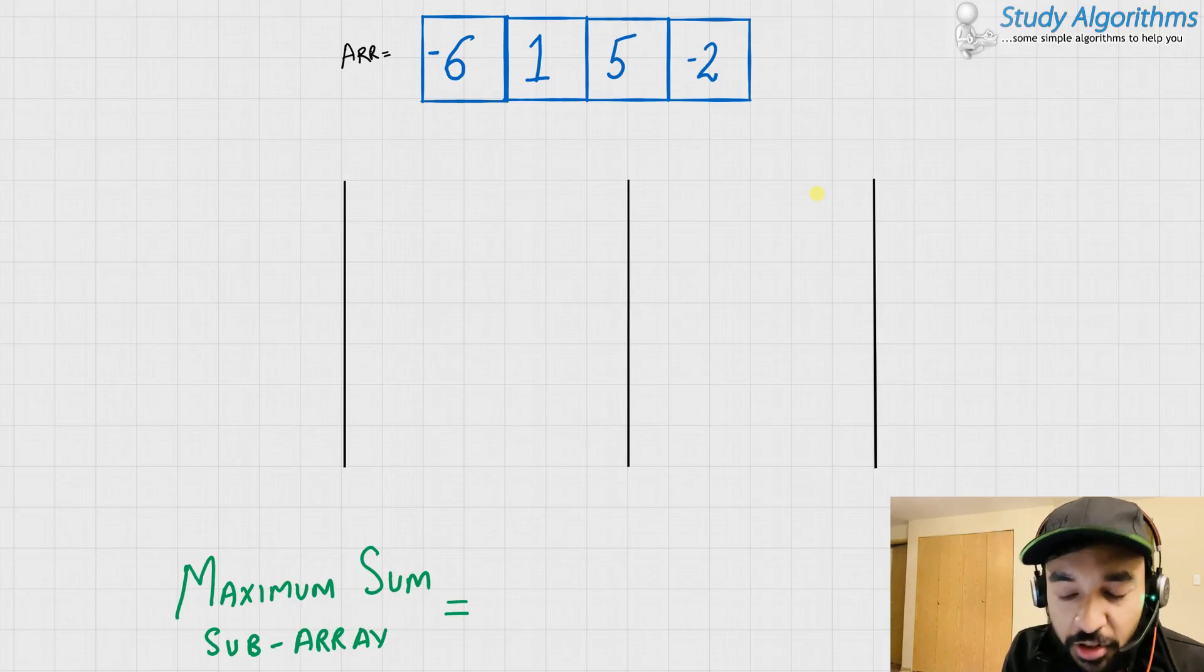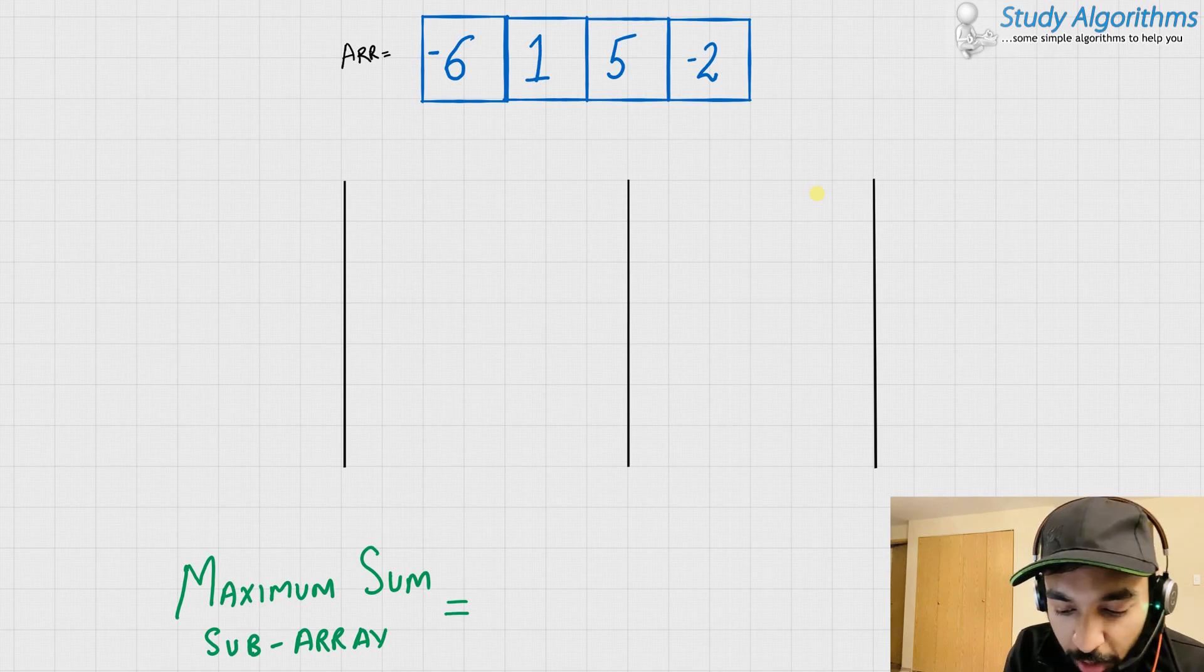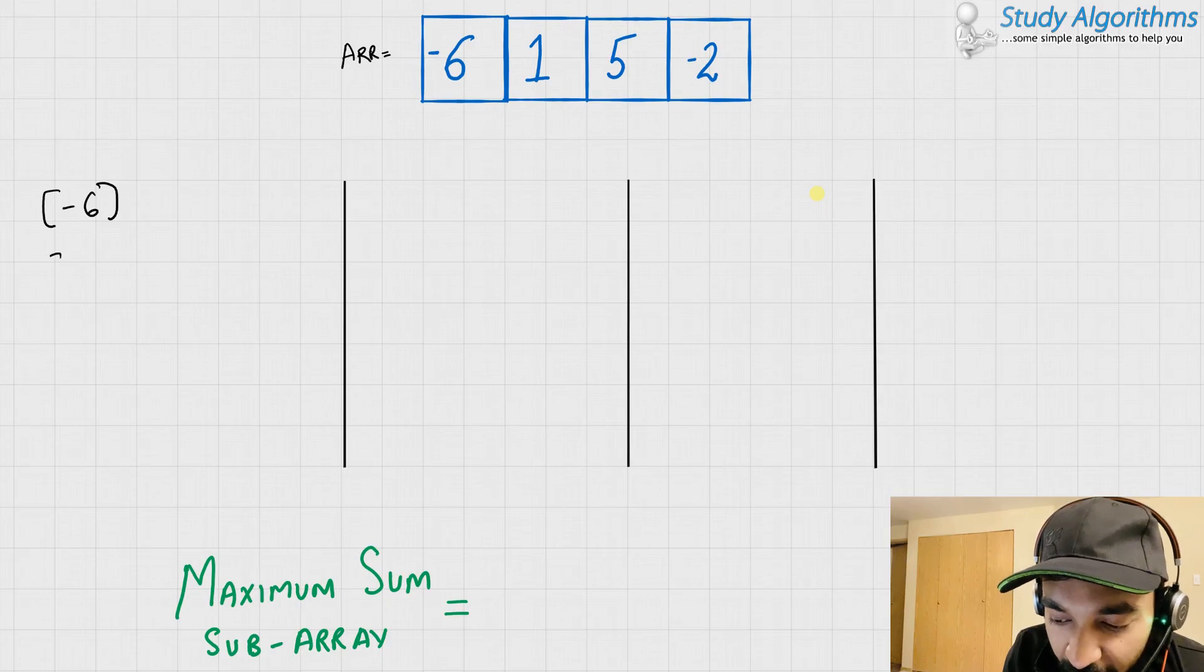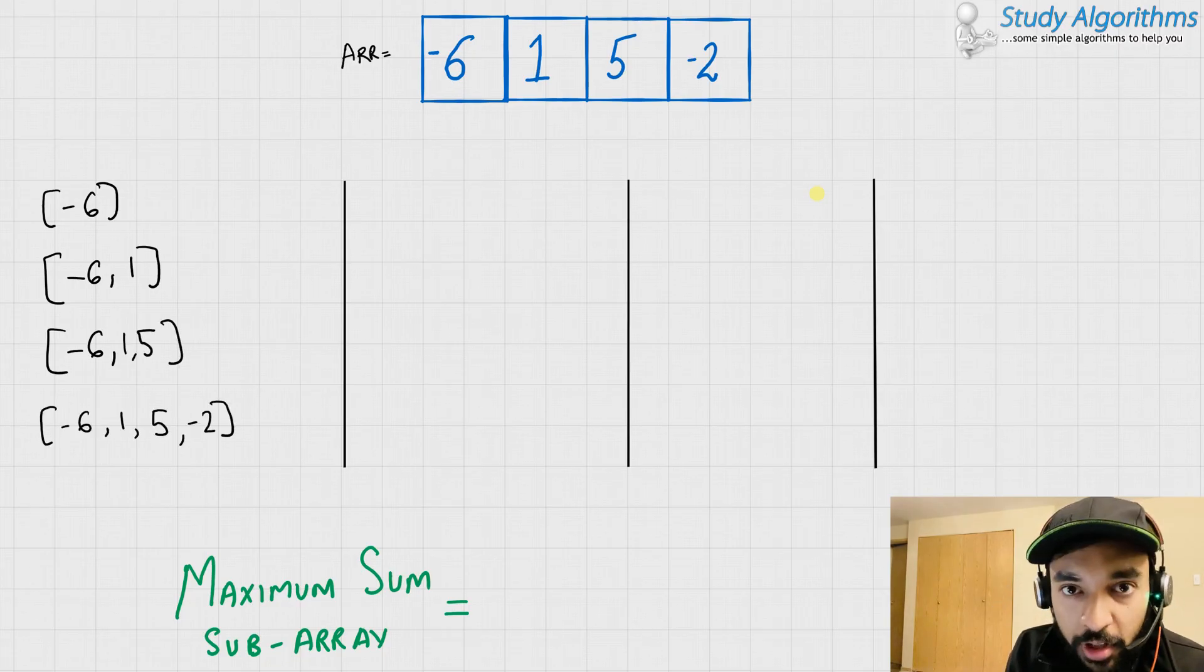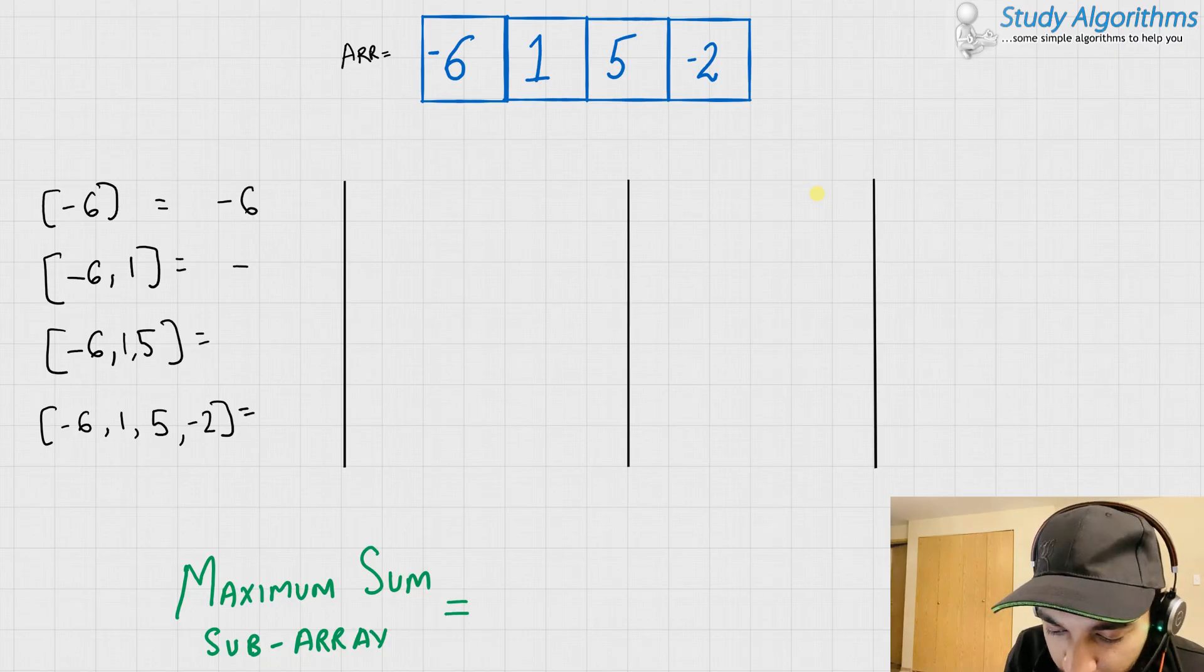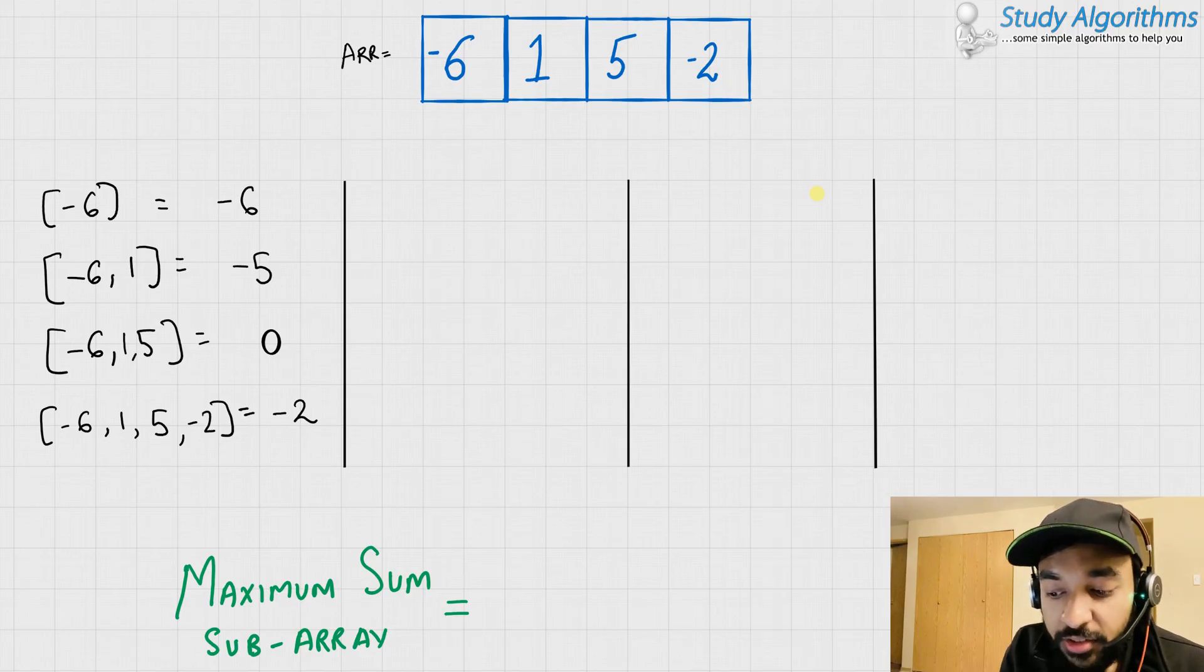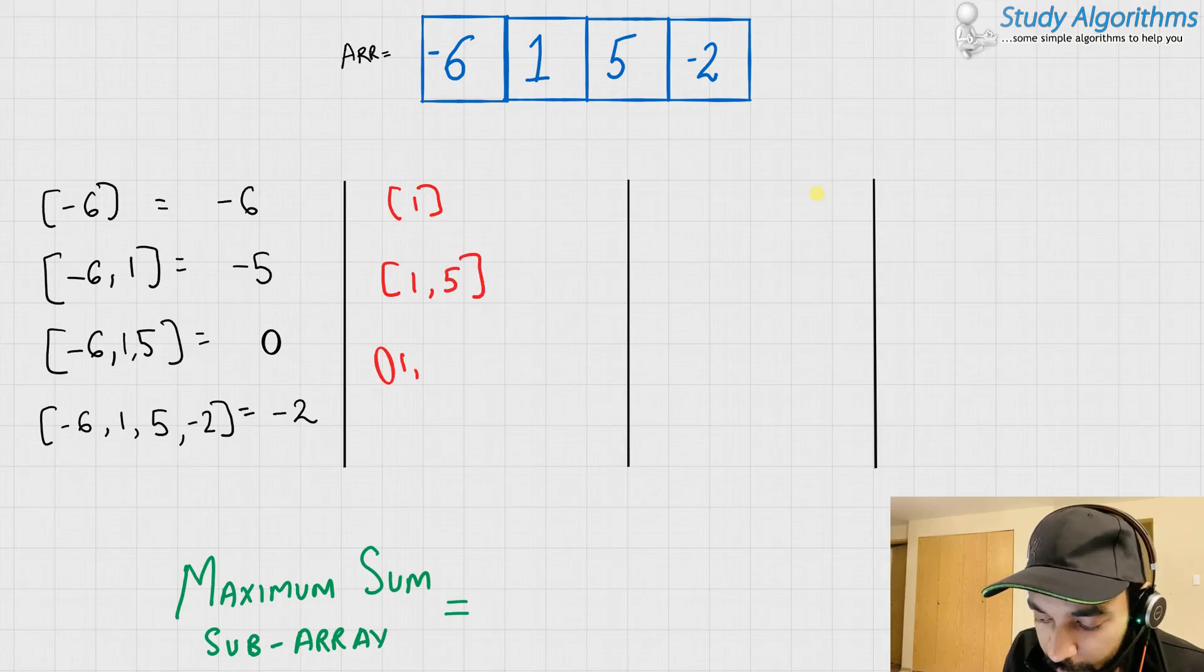So, let us take up each of these contiguous subarrays one by one. We start off with our array minus 6 and then we form all the contiguous subarrays possible starting with the first element. Now, we evaluate the sum. Up till now, the maximum sum possible is 0. Let us try to start our array from 1. Now, evaluating the sums.